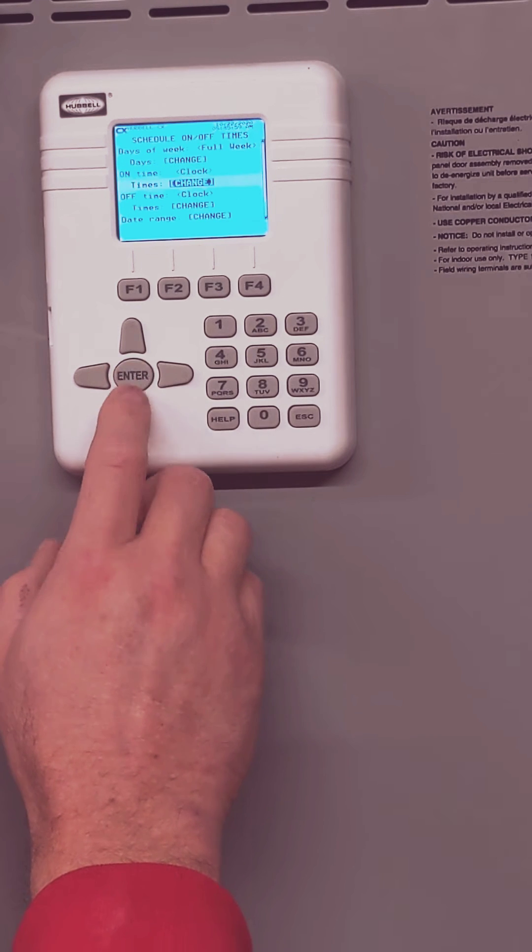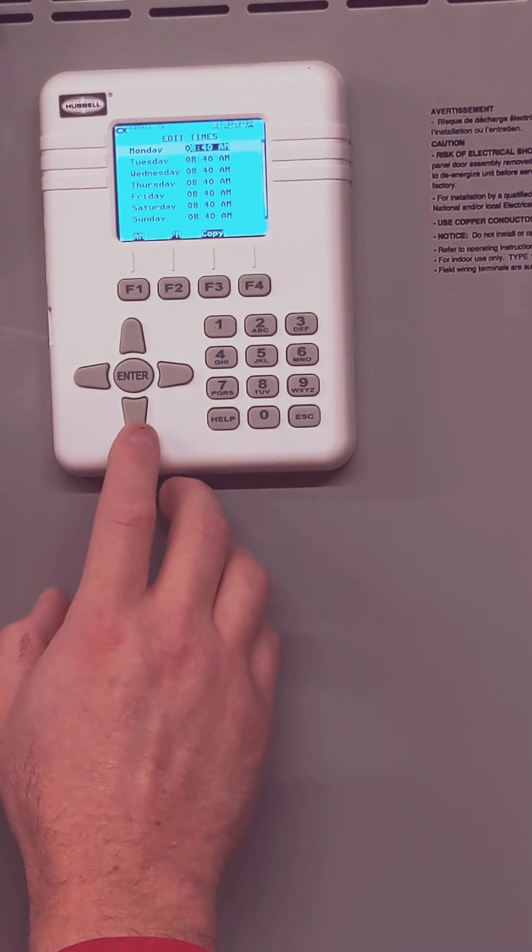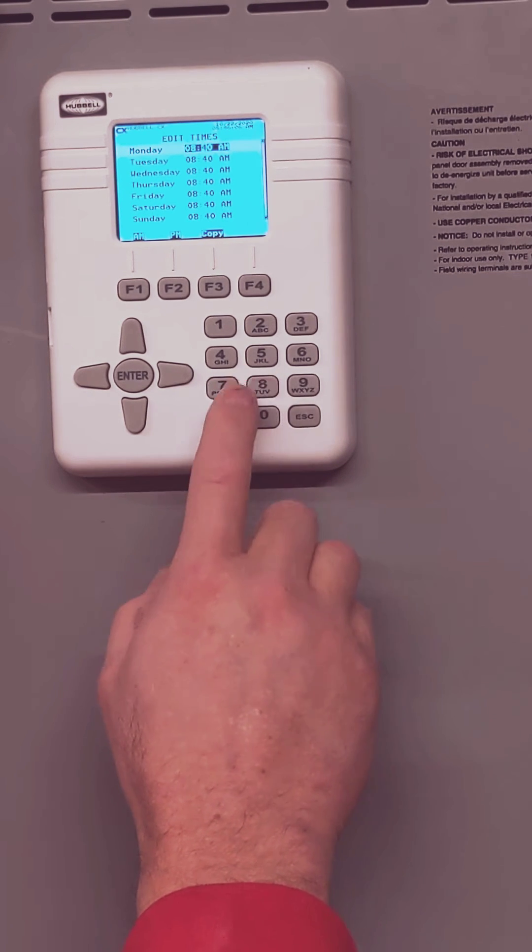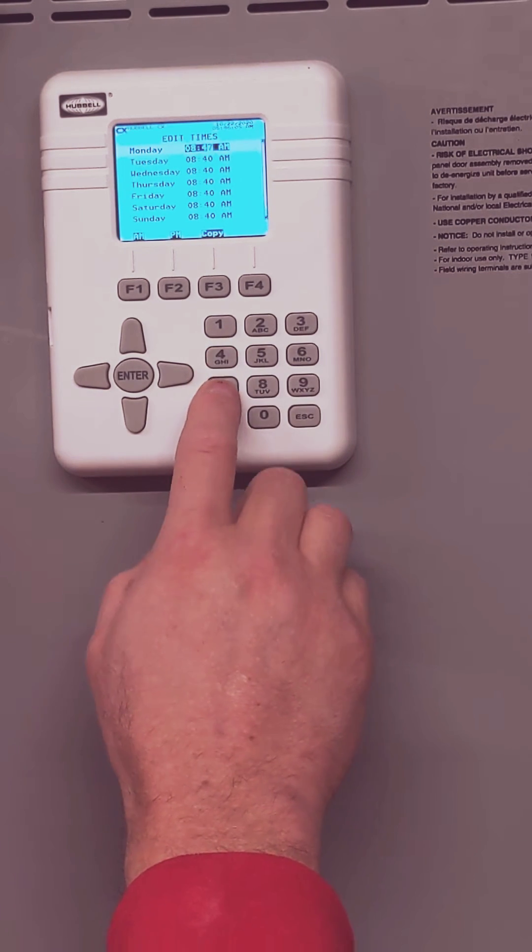Go to the time on, clock is 8. We want to change it to 8:47. So 0, 8, 4, 7.